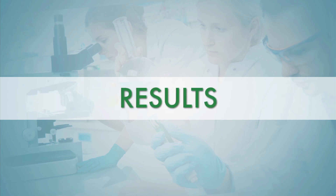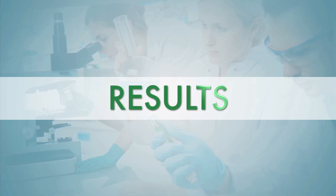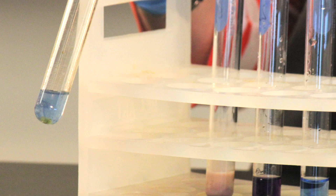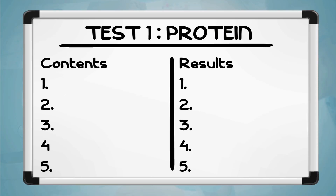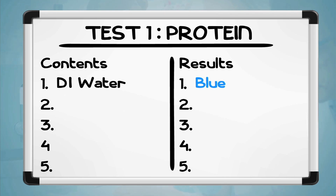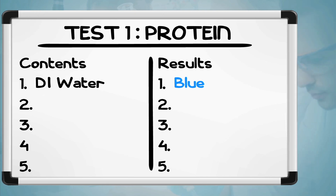Let's work through the results. Test tube one contains DI water — the contents are blue, indicating a negative test for protein. In Table 1, under the results column for test tube one, you should record 'blue.' Note that in your table you only record the actual results; save any conclusions for the conclusion section of your lab report. In this case, your conclusion would be that DI water tested negative for protein since it remained blue when biuret was added.